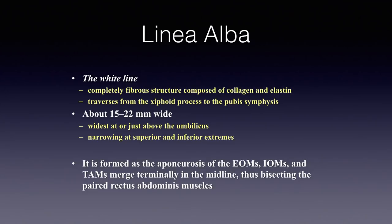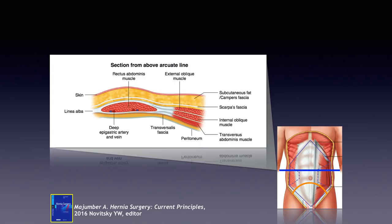When we look at a cross-section above the arcuate line, we see the oval cross-section of the rectus abdominis muscle, and the lateral compartment muscles contributing to both the anterior and posterior rectus sheaths. The external oblique aponeurosis contributes to the anterior rectus sheath. The internal oblique is an interesting muscle — it splits into two lamellae: the anterior lamella contributes to the anterior rectus sheath, and the posterior lamella contributes to the posterior rectus sheath. The internal oblique is the only muscle that completely envelopes the rectus abdominis at this level, like a pillowcase around it.